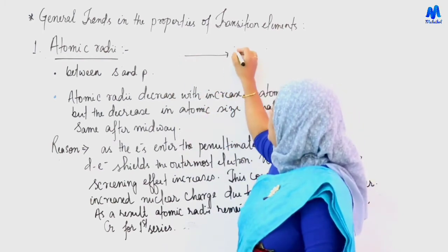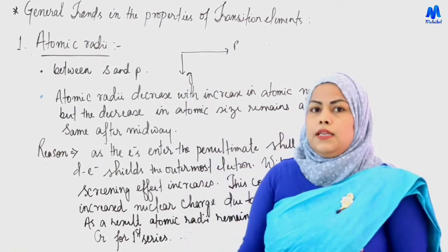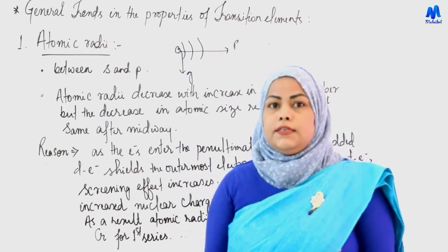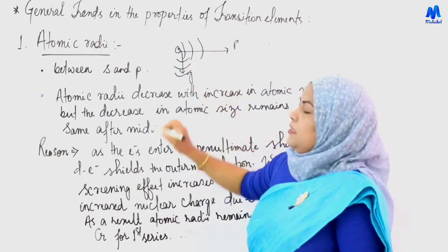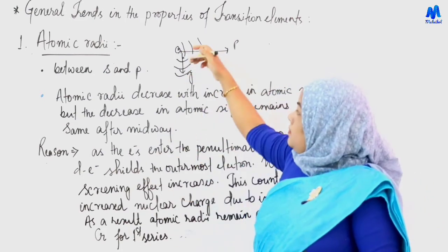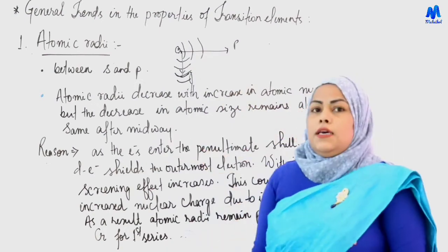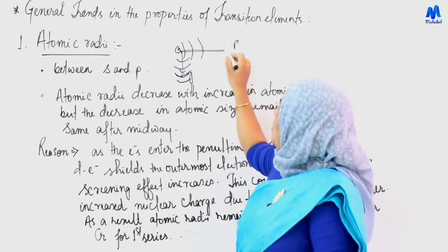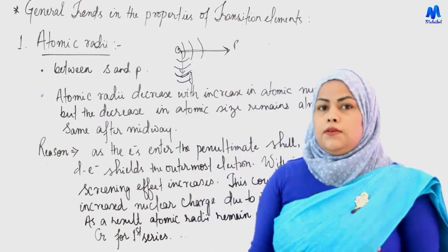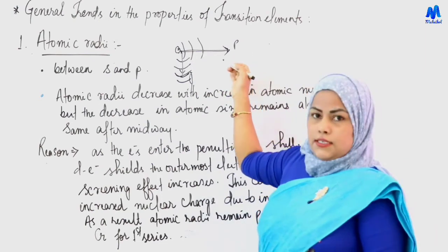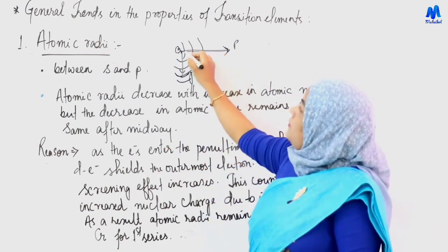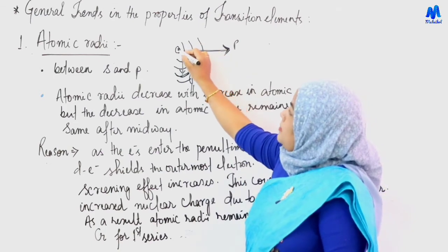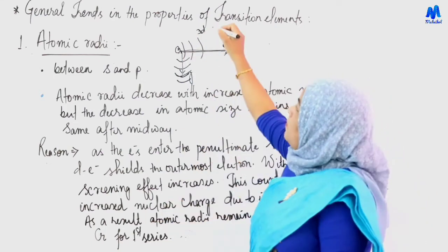In class 11, we studied atomic radii trends for s block and p block elements. Along a period, atomic radius decreases, and down the group it increases. For d block elements, within a series, the same cell electrons are being filled — for example, 3d electrons are added one by one from Scandium to Zinc.